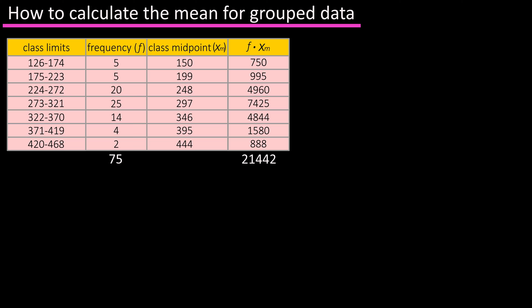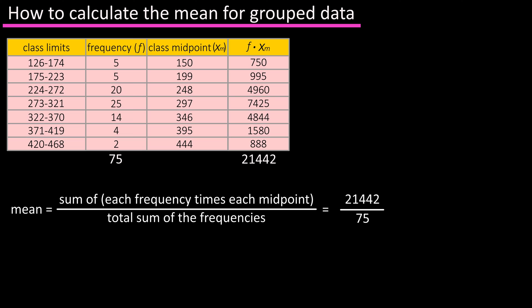Now that we have the sum of these numbers, we can find the mean of our grouped data, and to do this we're going to take the sum of the last column, the frequency times the midpoint column, and divide it by the sum of the frequencies. So 21,442 divided by 75 equals 285.893, rounding off we get 285.9.